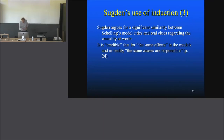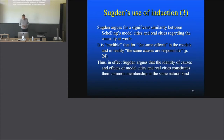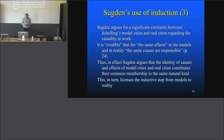He says it is credible that for the same effect in the models and in reality, the same causes are responsible. And there you see he doesn't presuppose that the cause is the same — he says it's plausible. This is a little unclear because he cannot show that the same causality is there. He just assumes that, and then for the same effects it's credible that the same causes are responsible. So in effect, Saxton argues that the identity of causes and effects of model cities and real cities constitutes their common membership in the same natural kind, and this licenses the inductive step from models to reality. We saw already this is a little tricky, but it's much, much worse even.